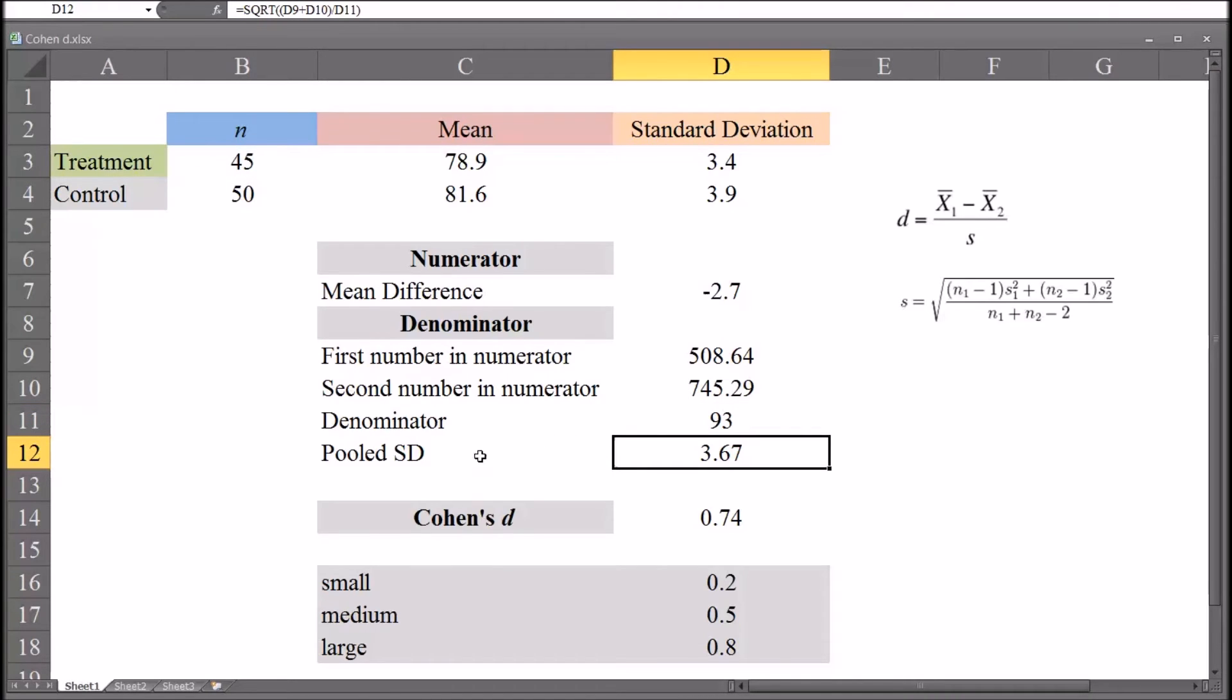And then let's look at the pooled standard deviation. The formula is the square root of the first number in the numerator plus the second divided by the denominator.